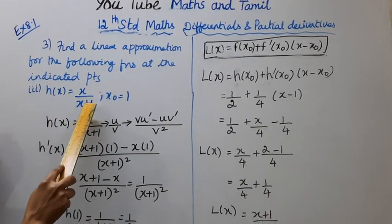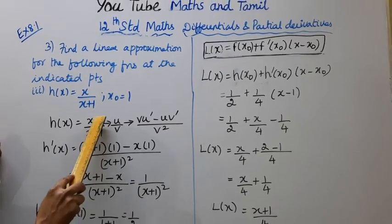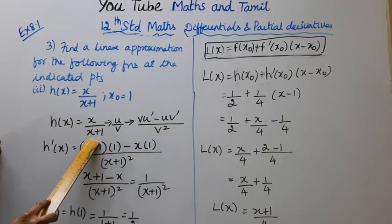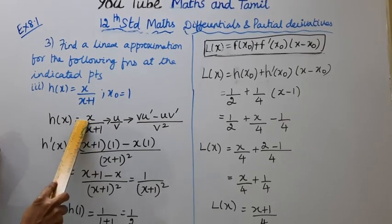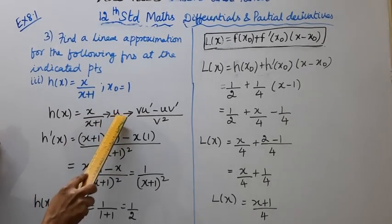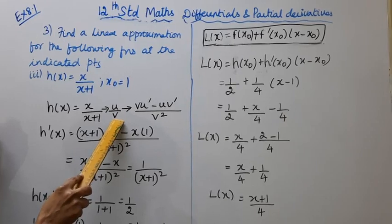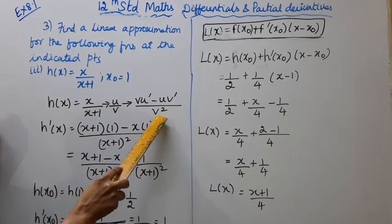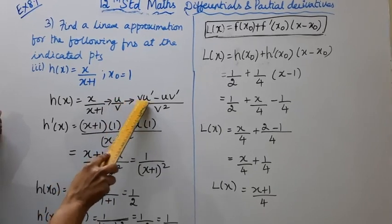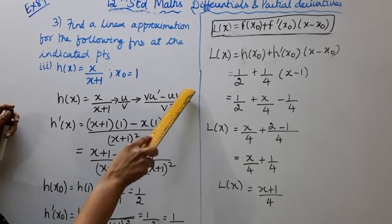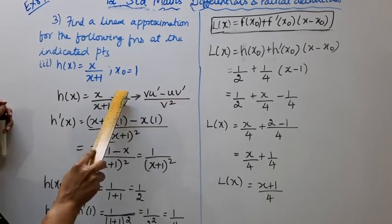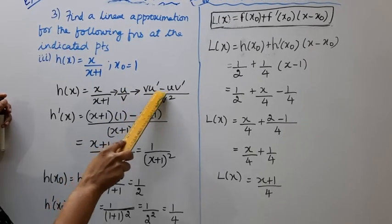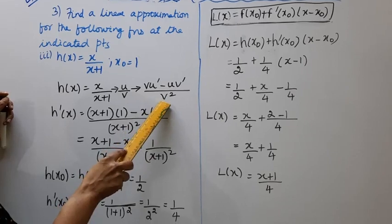h(x) = x/(x+1) — x is in the numerator and x+1 is in the denominator. So we use the u by v method. When we have u/v, the derivative is v·u' minus u·v', all divided by v squared. That is the formula for differentiating a numerator-denominator (quotient) form.